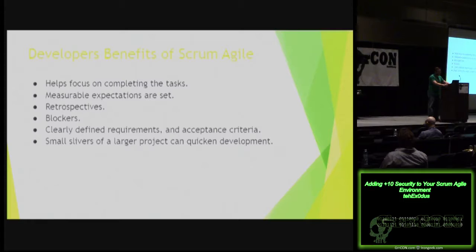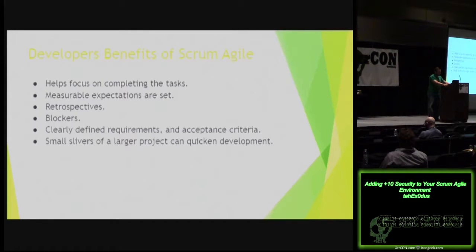Within this daily meeting, a recap is given of the previous day: this is what I worked on yesterday, this is what I'll be doing today, and if I complete that task, this is what I'll be working on next. Any issues are brought up and handled. Measurable expectations are given with a predefined length of time — a task is already laid out: this is going to take me six hours, or three hours. That time is set and the acceptance criteria is already written out, ideally, though that doesn't happen all the time.